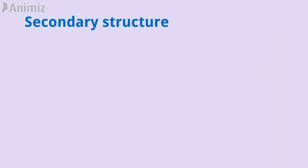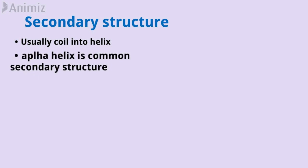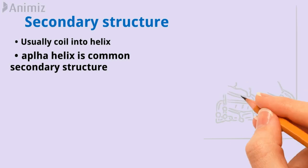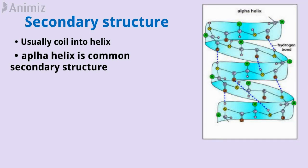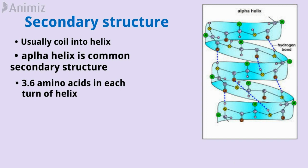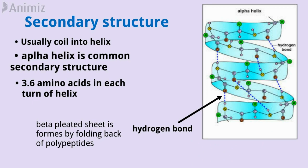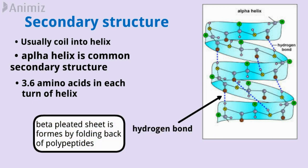The secondary structure refers to the fact that polypeptide chains in a protein molecule usually do not lie flat — they coil into a helix or some other regular configuration. One common secondary structure is the alpha helix, which involves a spiral formation of the polypeptide chain. The alpha helix is a very uniform geometric structure with 3.6 amino acids in each turn of the helix. The helical structure is maintained by hydrogen bonds among amino acid molecules in successive turns of the spiral. The beta pleated sheet is formed by the folding back of polypeptides.